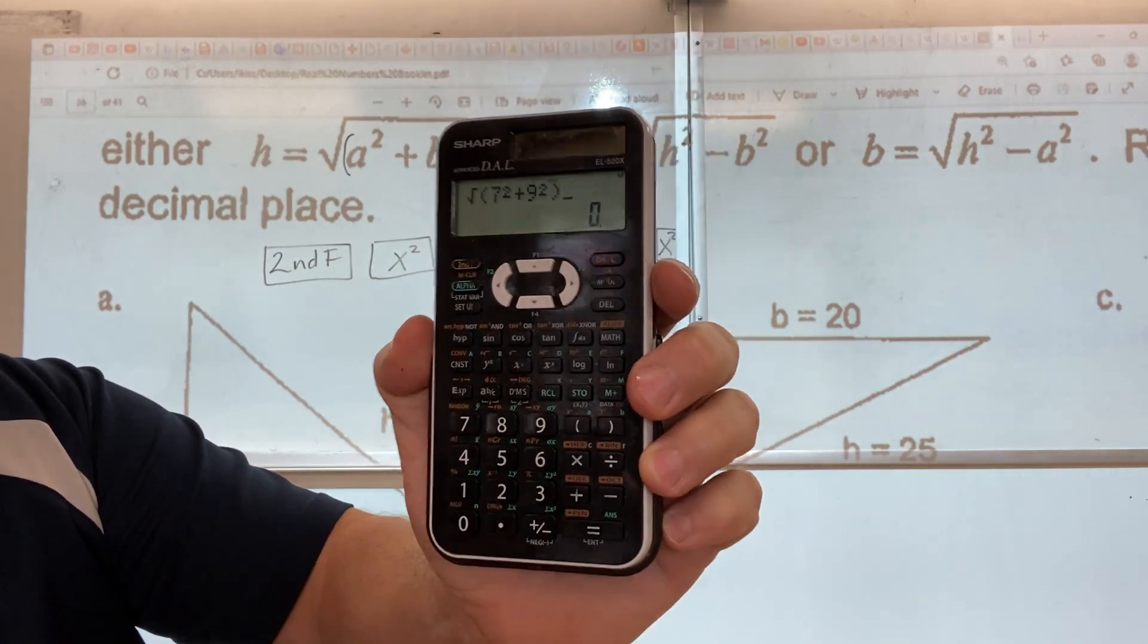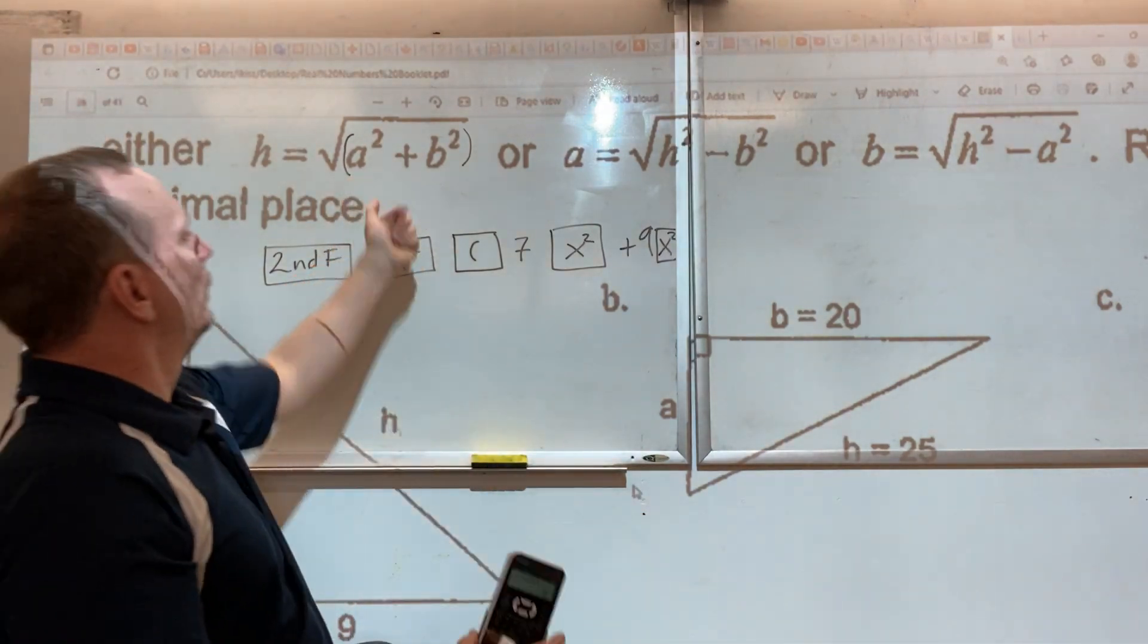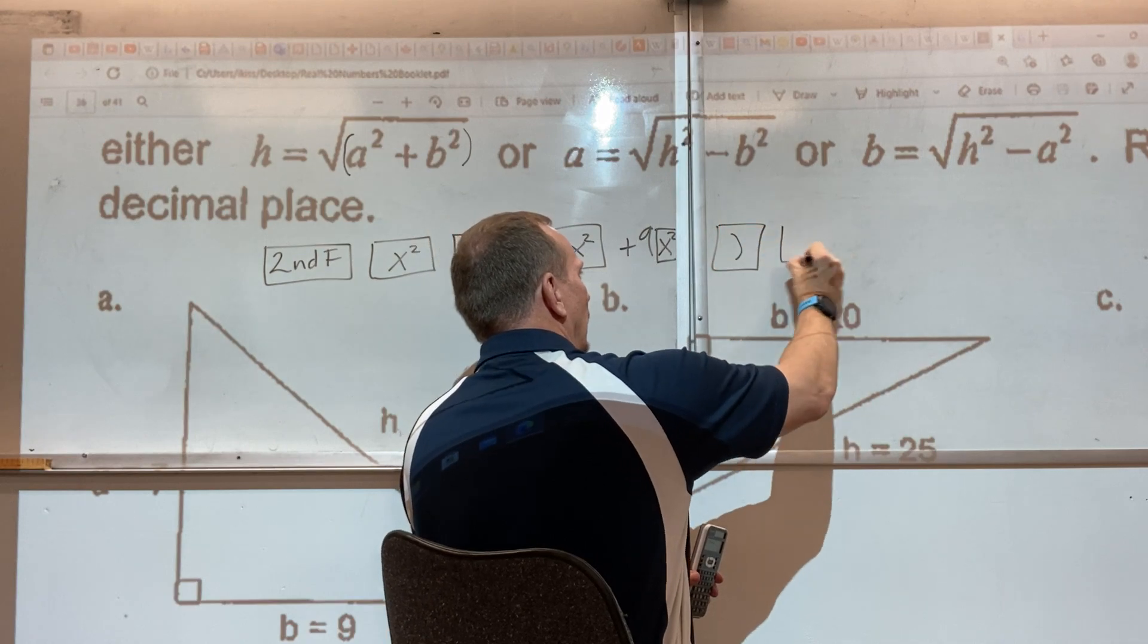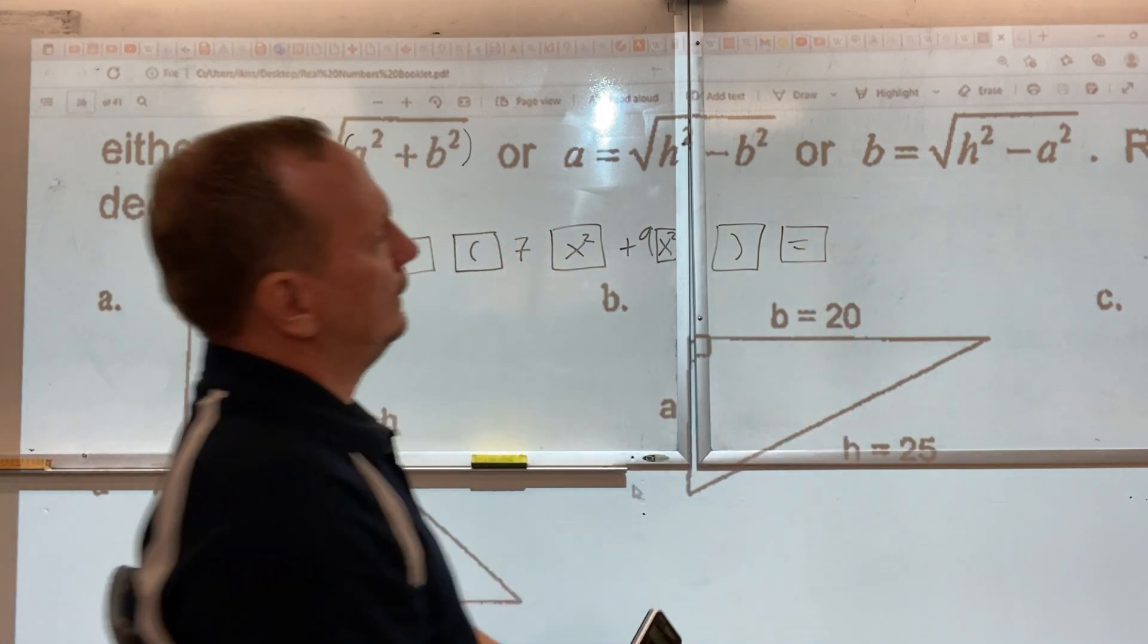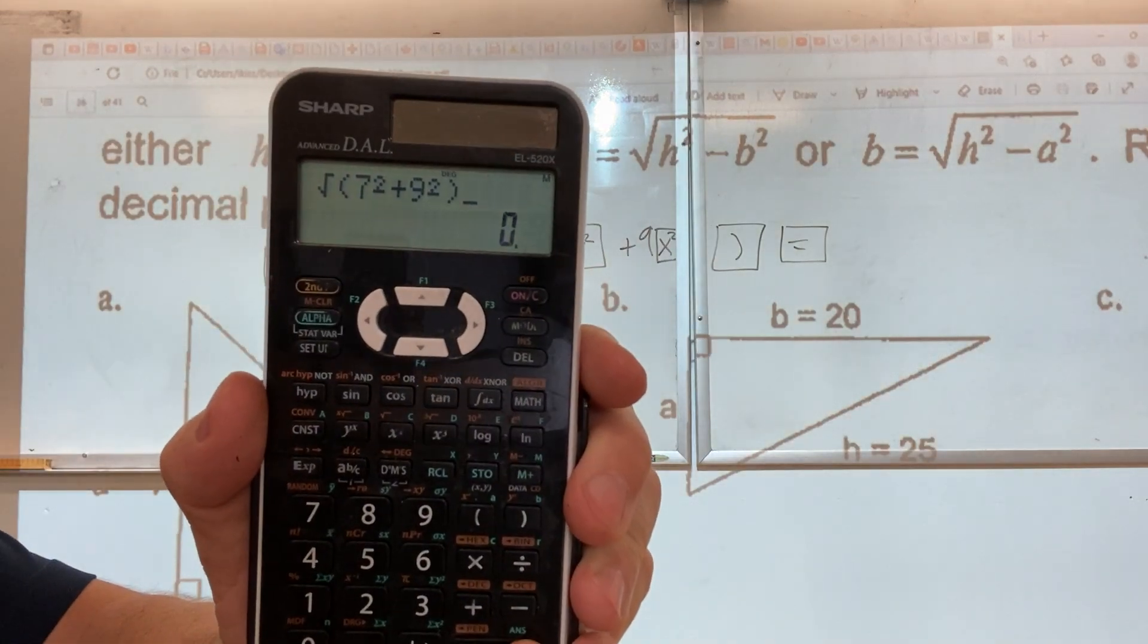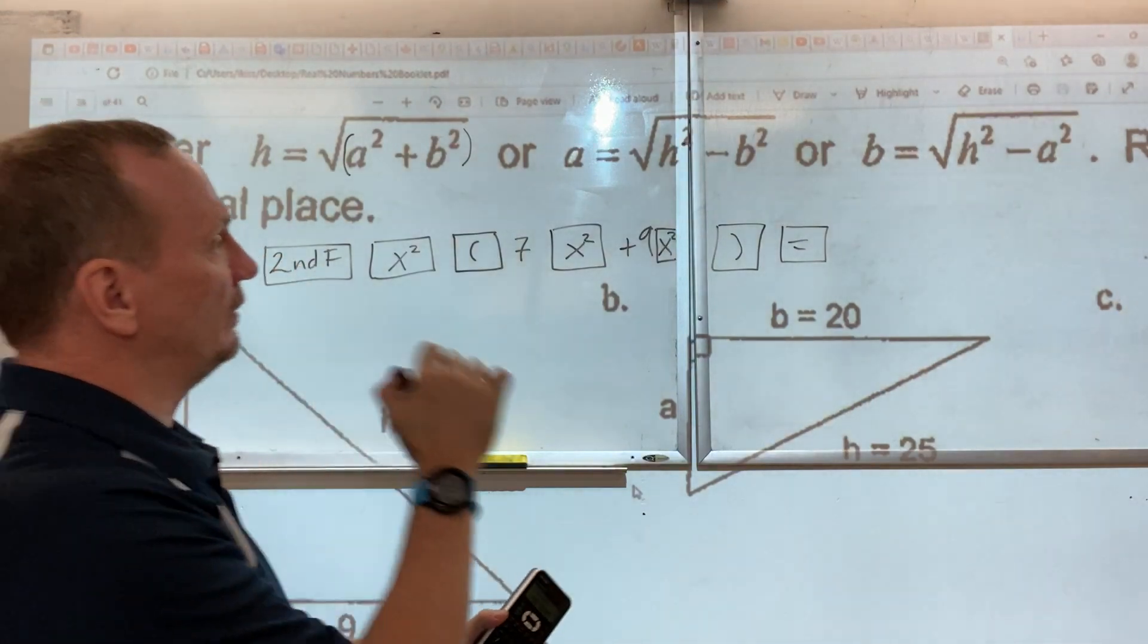Then we need to close that bracket because we're done entering this middle portion here. So close that bracket and then equals. And when I press equals I better see 11.4 on the screen. Alas, it is 11.4.